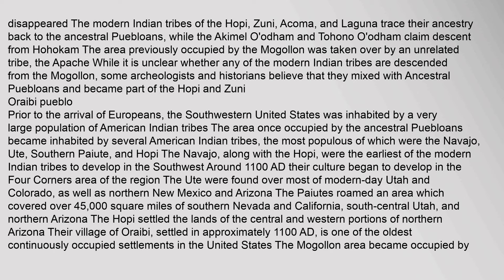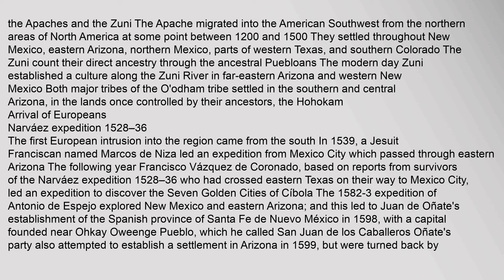The Mogollon area became occupied by the Apaches and the Zuni. The Apache migrated into the American southwest from the northern areas of North America at some point between 1200 and 1500, settling throughout New Mexico, eastern Arizona, northern Mexico, parts of western Texas, and southern Colorado. The Zuni count their direct ancestry through the ancestral Puebloans. The modern-day Zuni established a culture along the Zuni River in far eastern Arizona and western New Mexico. Both major tribes of the Oadam tribe settled in southern and central Arizona, in the lands once controlled by their ancestors, the Hohokam.